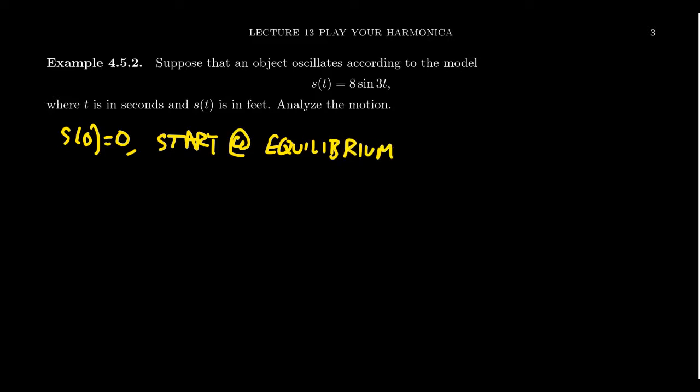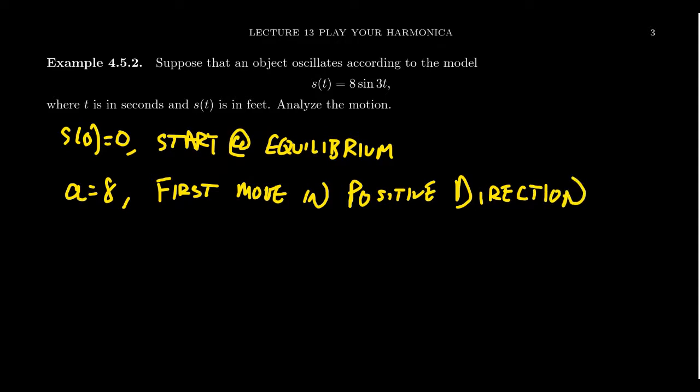So we're going to start at equilibrium here. What else can we say? Well, the amplitude is given as 8. So what does that say? If the amplitude is 8, that implies that the object will initially move in the positive direction by 8 feet. So first, we're going to move in the positive direction. If it was a negative 8, we would have moved in the negative direction. So we move in the positive direction, whatever that is. I need some more reference before I can do that. But we're going to move in the positive direction, 8 feet.